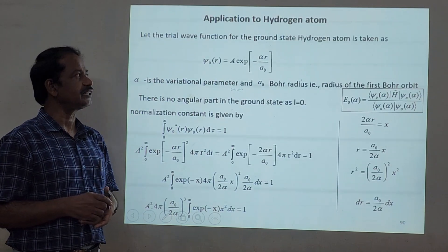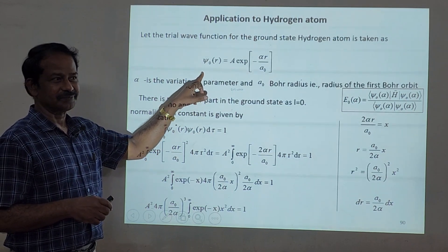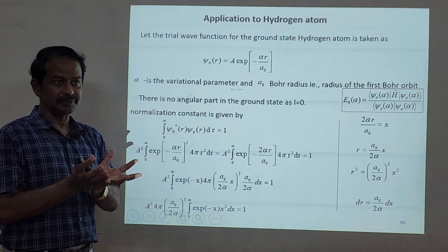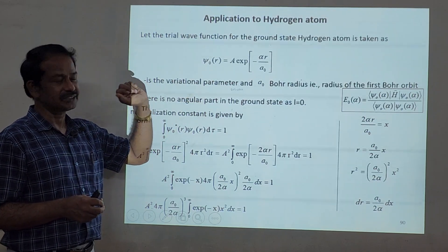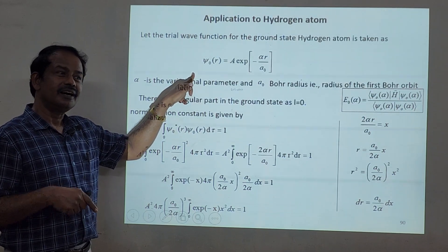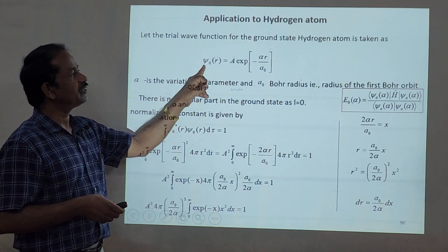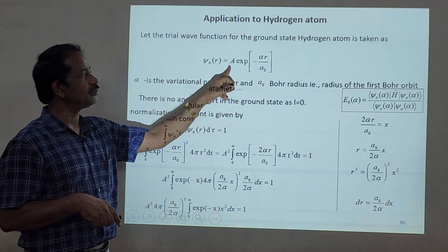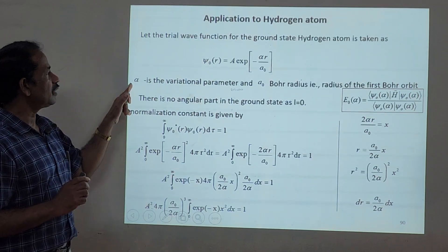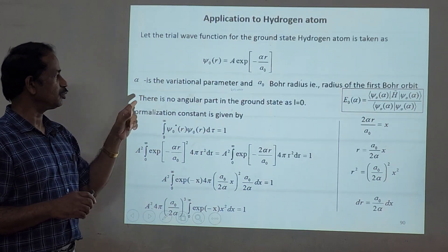First, applications to the hydrogen atom. We are going to guess the trial wave function ψ₀(r) for the ground state, which is equal to ae^(-αr/a₀), where α is the variation parameter and a₀ is the Bohr radius — the radius of the first Bohr orbit.